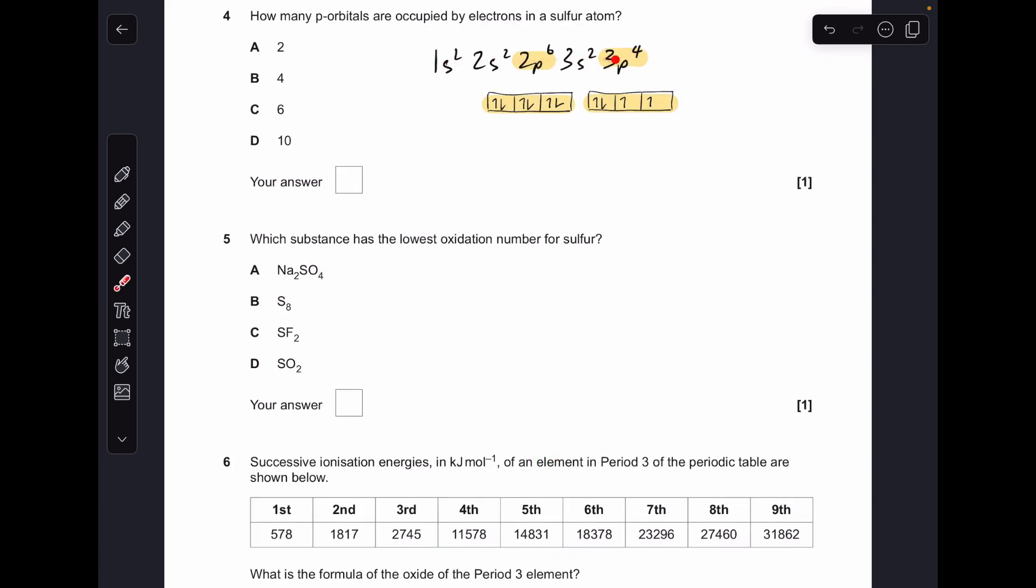Number four, there's the electron configuration for the sulfur atom. There's the p configurations that we're interested in, so you can see there's a total of six orbitals occupied, so it's option C.